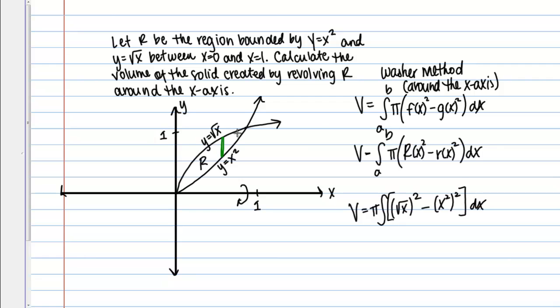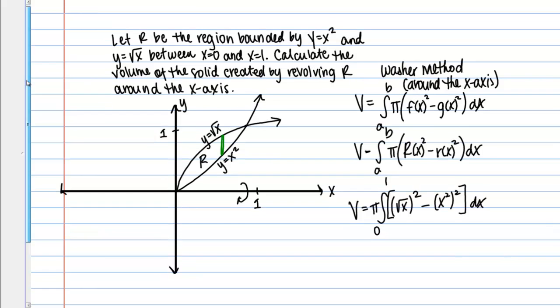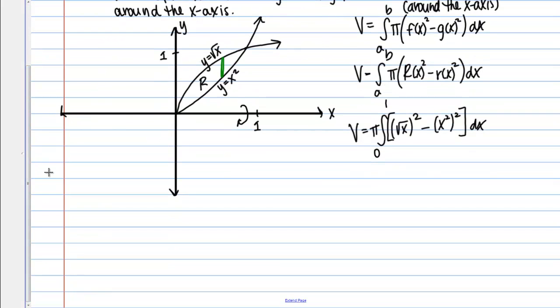I need to add my bounds, which are just the bounds of my region in terms of x. My region goes from x = 0 to x = 1. Cleaning this up, I have π times the integral from 0 to 1 of (x - x⁴)dx.